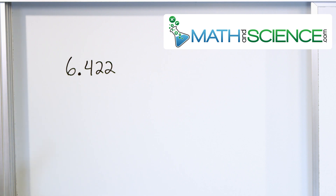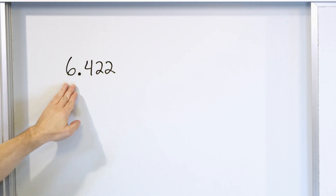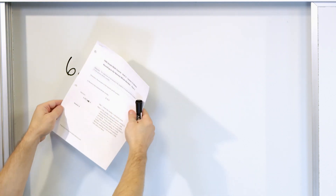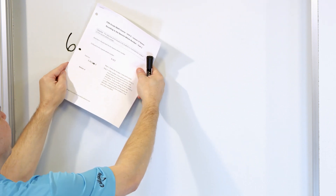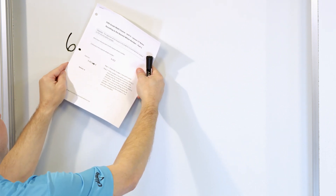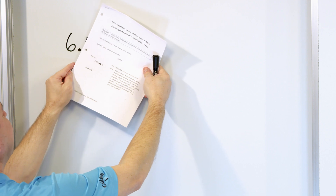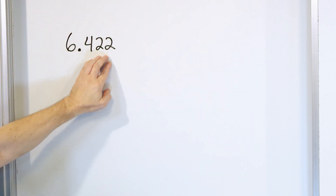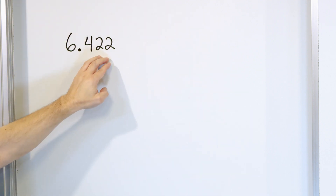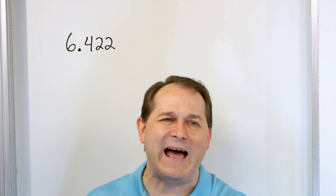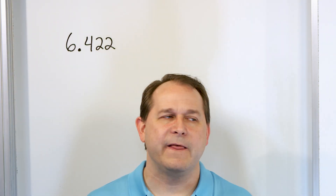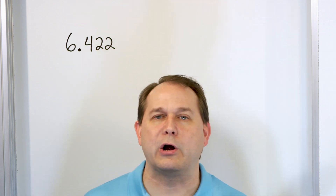Before we round anything, let's talk briefly about what this actually means. If you cover up the decimal, the number we have is like six loaves of bread. The decimal point and the numbers after it basically tell us how close we are to the next whole number — the numbers after the decimal just tell us the fractional part.